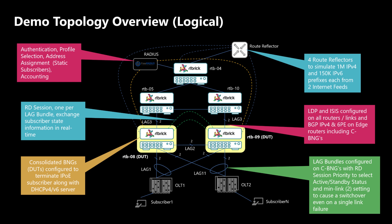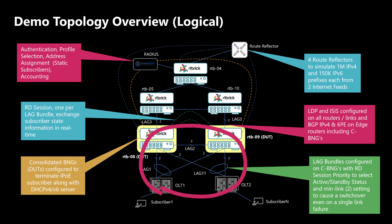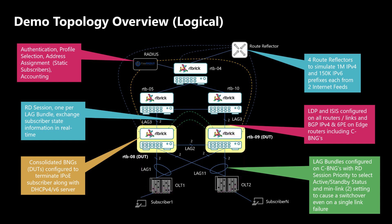Looking at the logical topology, we see various connections and protocols used for the demo. We are setting up 10,000 IPoE subscribers over two OLTs — 5,000 subscribers served by DUT1 RTB08 and 5,000 by DUT2 RTB09. Each OLT is connected to both DUTs via LAG interfaces, and the LAG member to the active BNG only will be active. DUTs are also connected to each other via LAG and towards the core via LAG interfaces. In the core routers we have ISIS and LDP running.